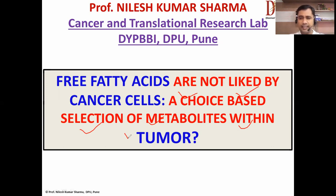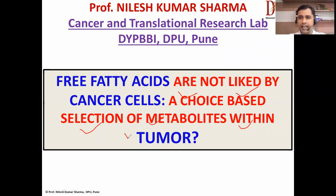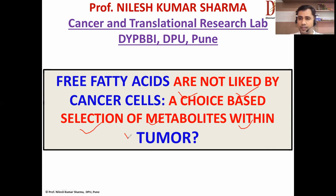In other words, cancer cells within the tumor microenvironment, along with non-cancer cells that are working in favor of cancer — referred to as cancer-associated cells — which can be adipocytes, immune cells, or stromal cells. Not only cancer cells but also these non-cancer cells within the tumor microenvironment develop a sort of choice-based selection of metabolites. There are various types of metabolites: carbohydrates, amino acids, and fatty acids.